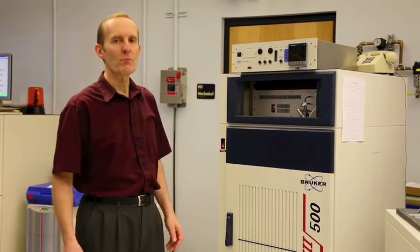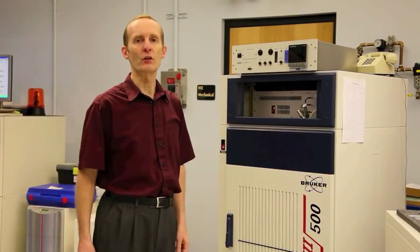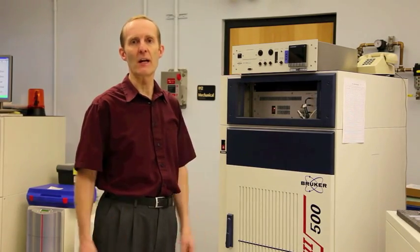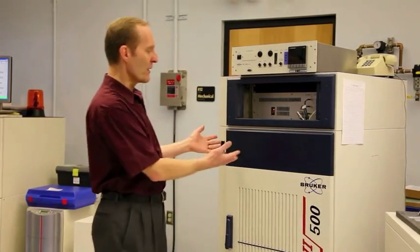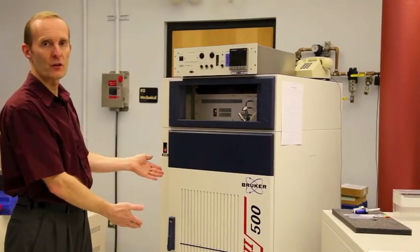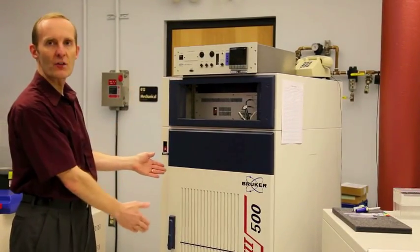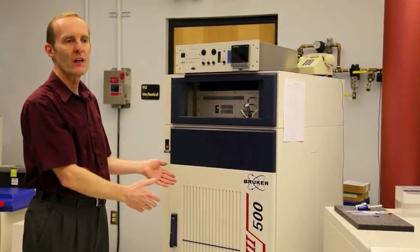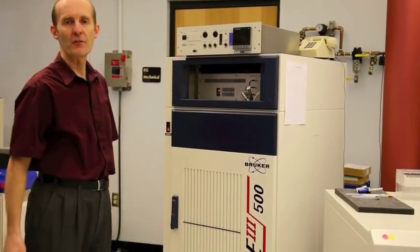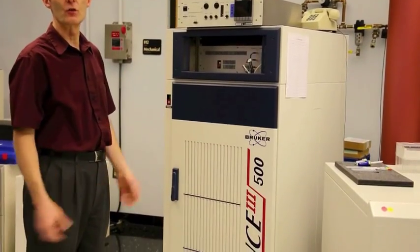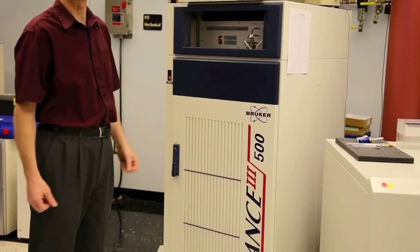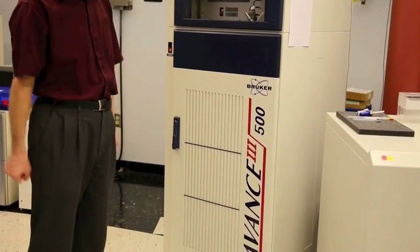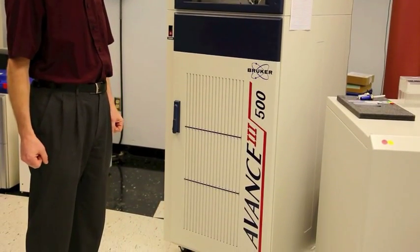Besides the magnet, there are several other very important components in order to get an NMR spectrum. One of them is the whole electronics. We have a whole rack filled with components that produce our RF frequencies in order to excite our spins and then measure the spectrum for the NMR measurement.